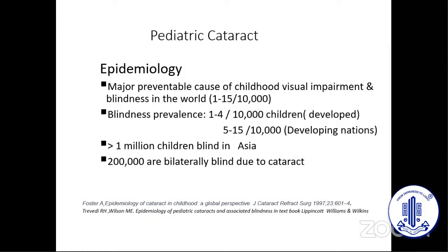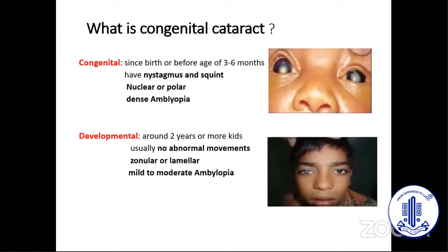Blindness earlier used to be 1 to 4 in 10,000 in the developed world and 5 to 15 in the developing nations. But right now it's becoming a universal thing — it's happening everywhere. Populations are migrating from one place to another, so we keep getting these patients.